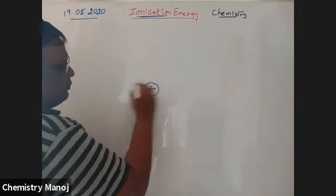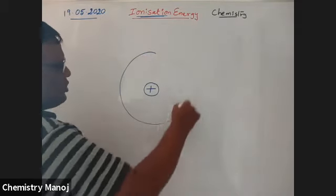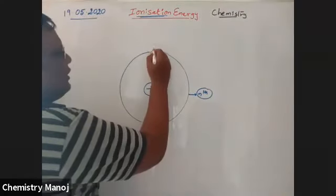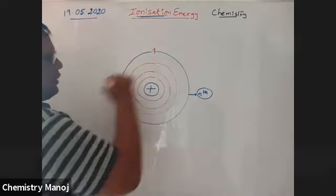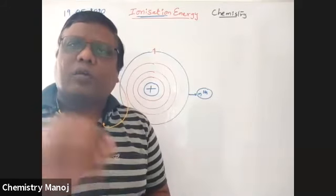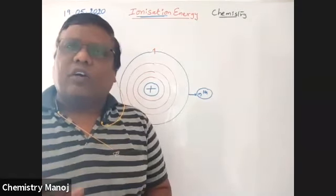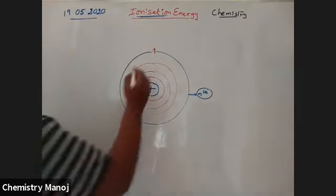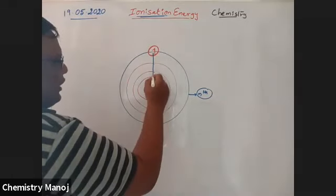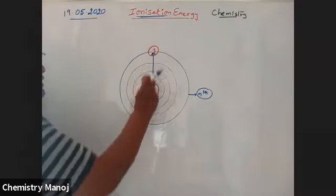In a neutral atom, the nucleus holds all the positive charge, and the outermost electron is in the nth orbit. There is an attractive force between the nucleus and the valence electron, meaning this electron is influenced by nuclear attraction.